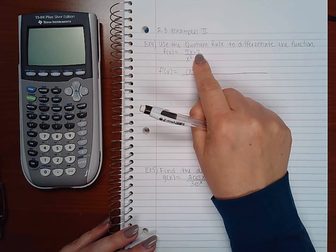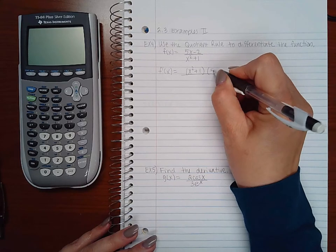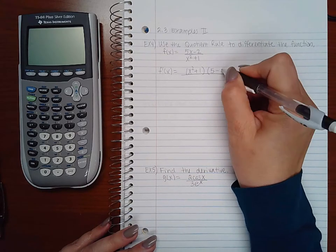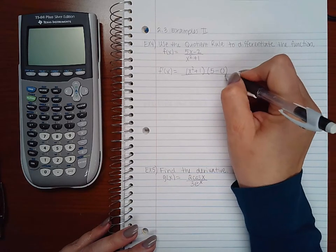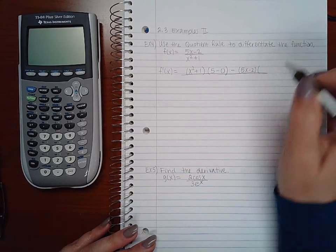So I'm going to have to take the derivative of each term individually. The derivative of a constant times x is just that constant. And the derivative of a constant 2 is 0. Minus high, d low.